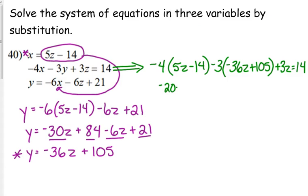So we've got negative 20z plus 56 plus 108z minus 315 plus 3z equals 14. Combine the z's. Negative 20 plus 108 gives us 88 plus 3. So that's 91z.